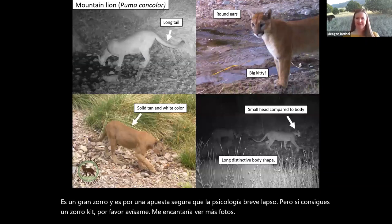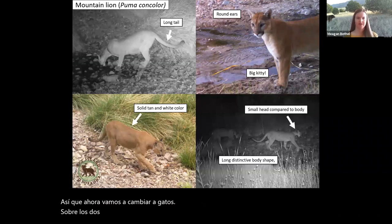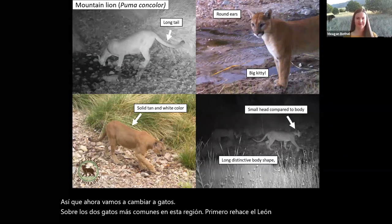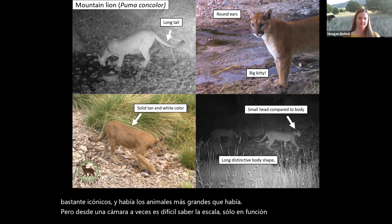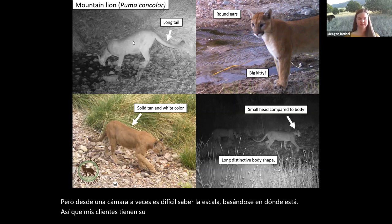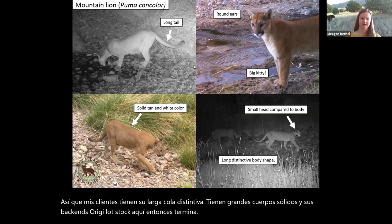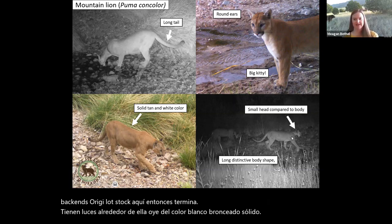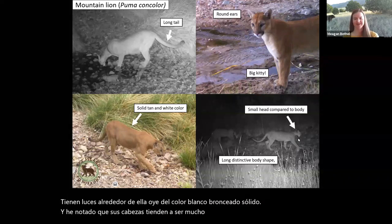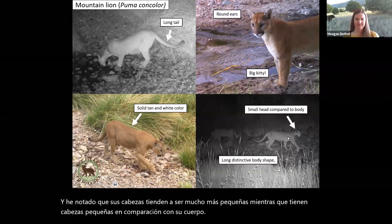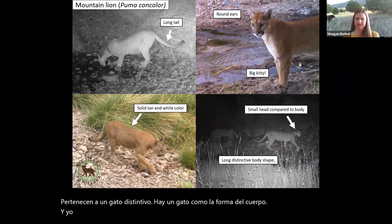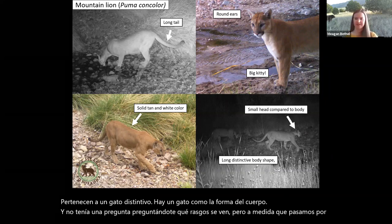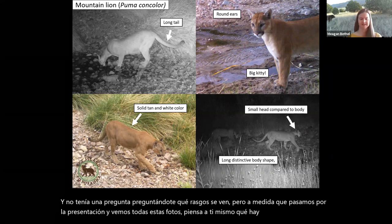Now we're going to switch to cats. The two most common cats in this region — first, the mountain lion. They're pretty iconic and one of the largest animals out there, but from a camera it's sometimes hard to know the scale. Mountain lions have a long distinctive tail, large solid bodies with back ends stockier than their front ends, and nice rounded ears in a solid tan-white color. Their heads tend to be small compared to their body. They have a long, distinctive, very cat-like body shape.